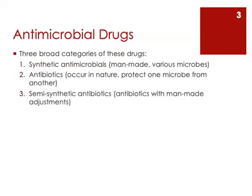When we talk about antimicrobial drugs, it's important that we keep in mind the source of these drugs, and they are generally sourced from three different groups. The first are the synthetic antimicrobials — drugs that are 100% man-made and can target various types of microbes. Then there are the antibiotics. An antibiotic, by definition, is a compound that occurs in nature, produced by a living organism, that protects one microbe against an attack by another microbe. We then harvest the antibiotic from these living cells and use it for our own purposes.